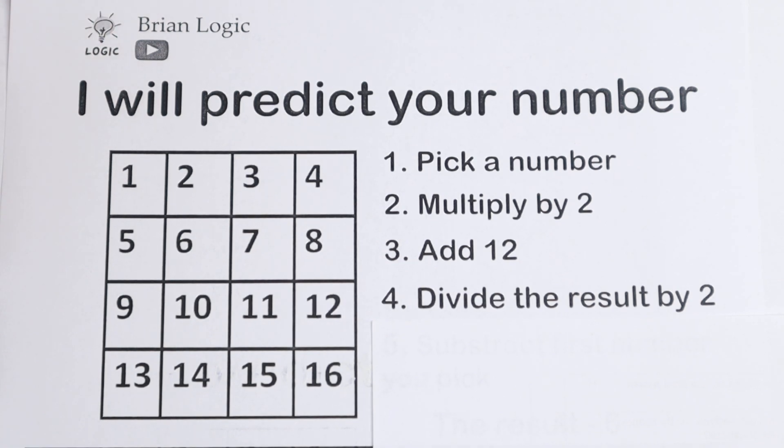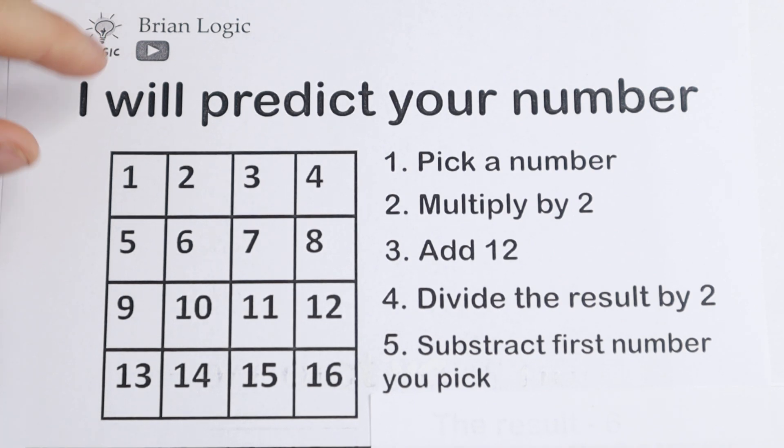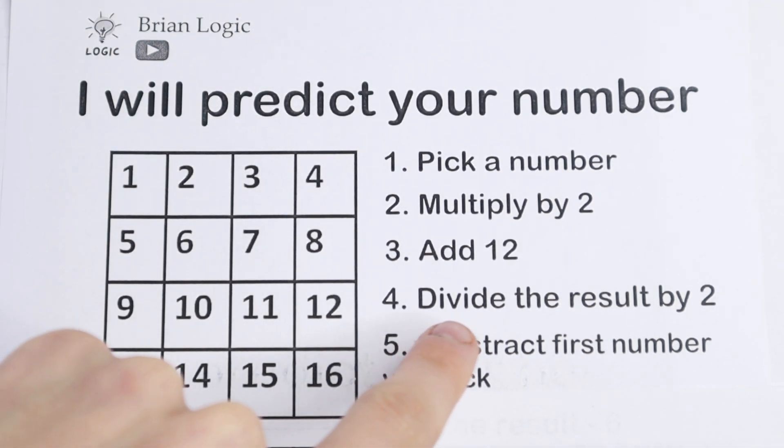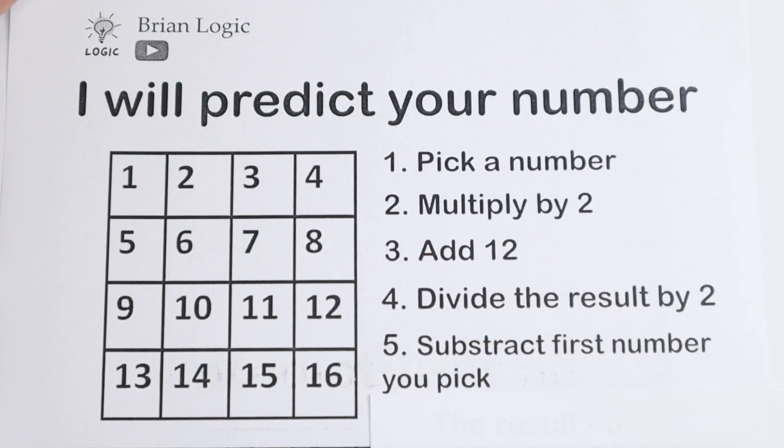And the fifth step. Right now you're dividing by 2, you have the result. And the fifth step, you need to subtract first number you pick. For example, you have right now after division, you have 10 and you subtract the first number you pick. I don't know this number, but you know it.